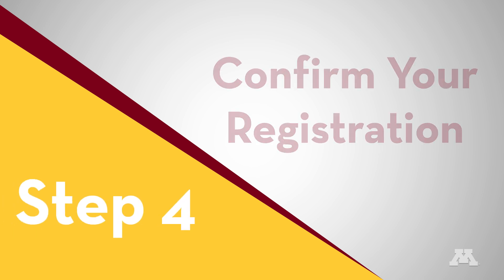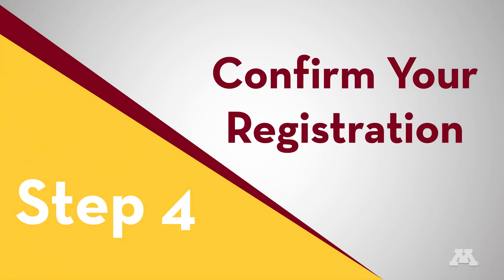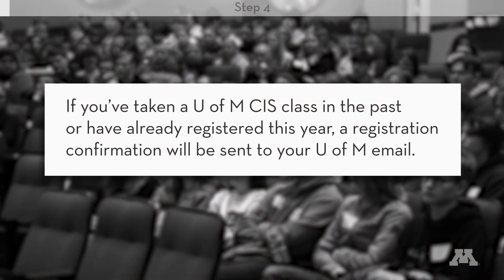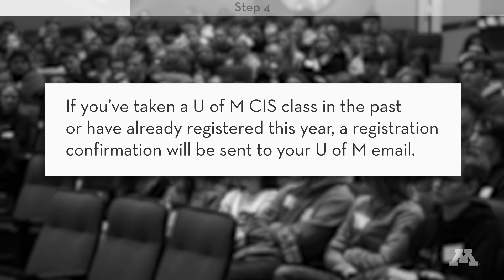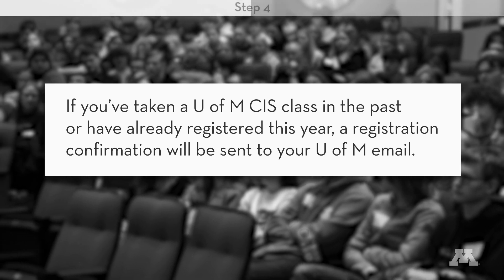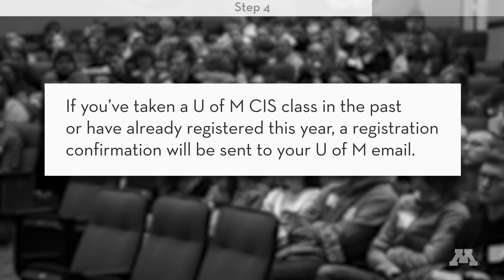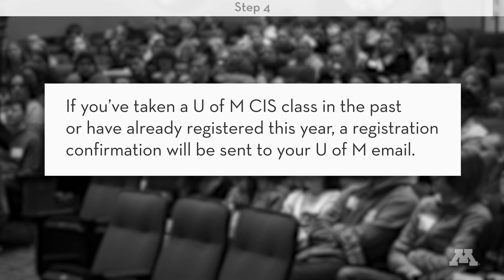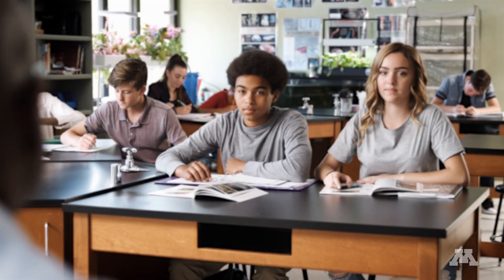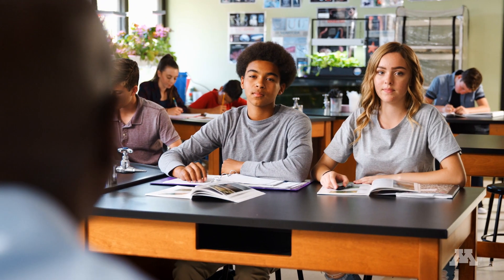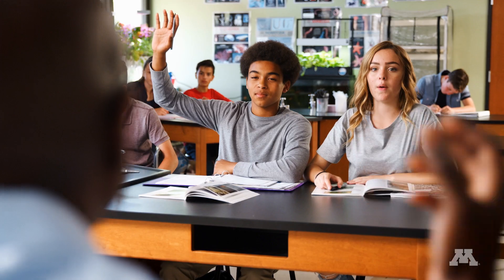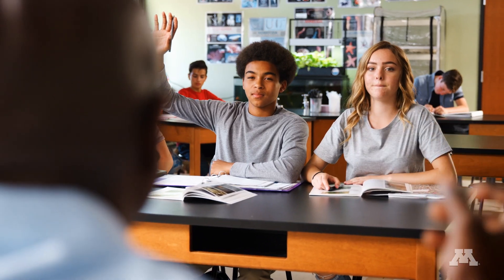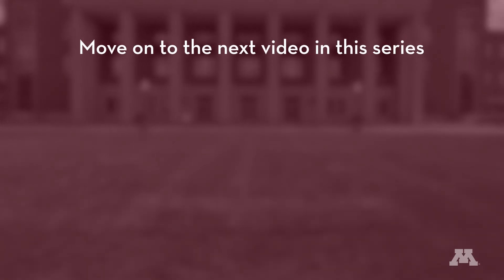Step 4: Confirm your registration. If you have taken a U of M Twin Cities CIS class in the past or have already registered for a class this year, a registration confirmation will be sent to your U of M email. If you are new to CIS at the U of M, registering for your class through MyCIS is only your first step. To make things official, you also need to activate your U of M internet account and email. To learn how, move on to the next video in this series.